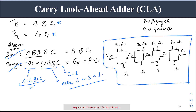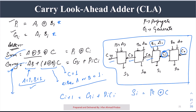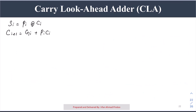Looking at the ripple carry adder diagram, the carry equation generalizes as C(i+1) = Gi + Pi * Ci, meaning the next carry depends on the previous Gi, Pi, and Ci. The sum equation is Si = Pi XOR Ci. The subscripts 0, 1, 2, 3 can all be generalized using subscript i.